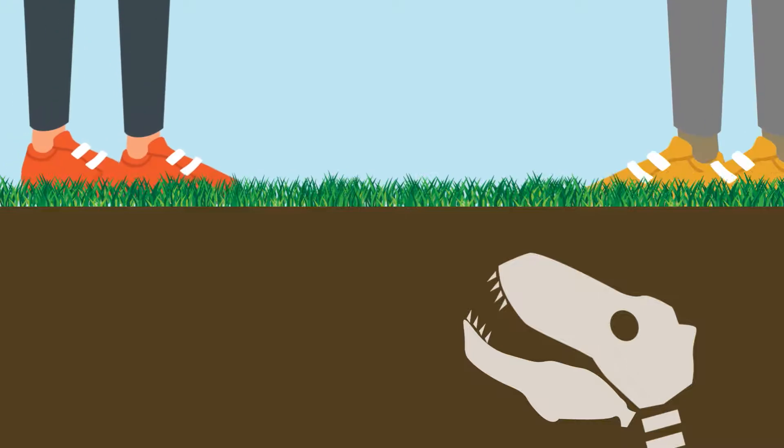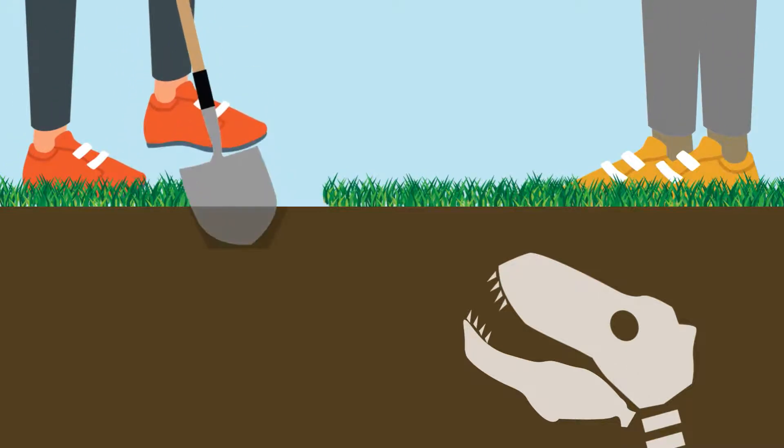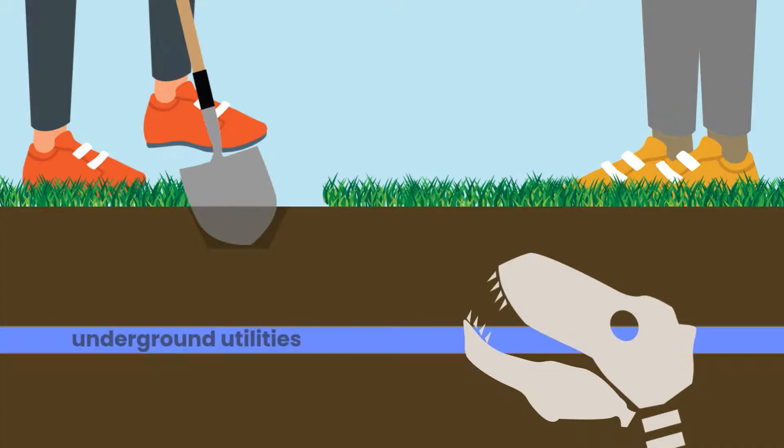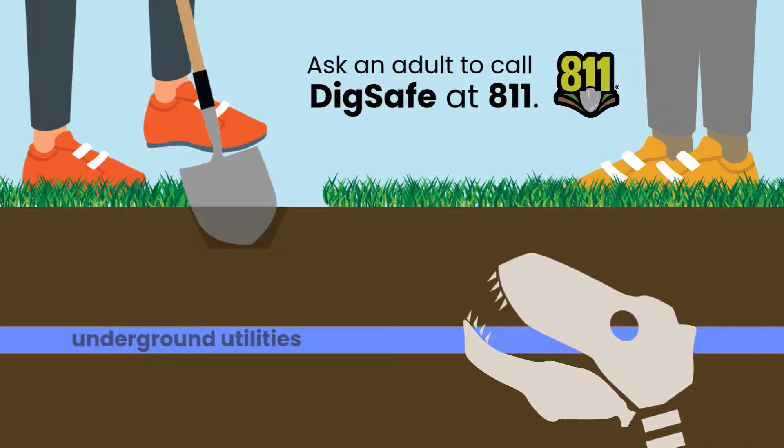If you and your science buddies decide to search for dinosaur bones or arrowheads in the yard, you could be digging somewhere where there are underground utilities. Ask an adult to contact DigSafe to be sure that there is nothing that lies below.